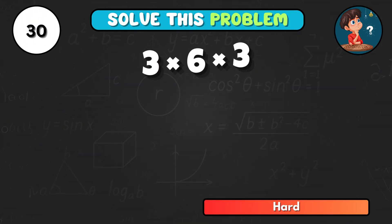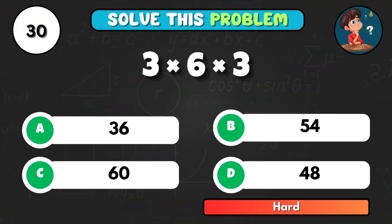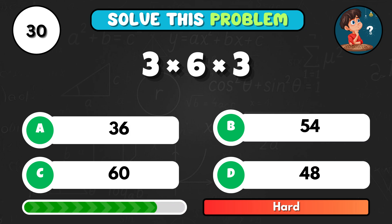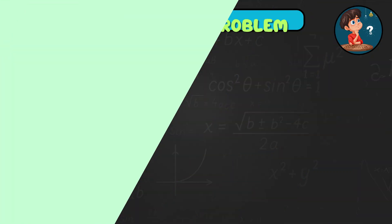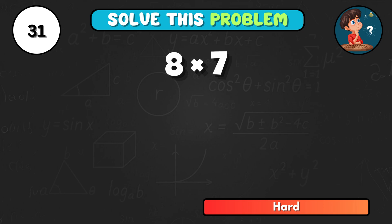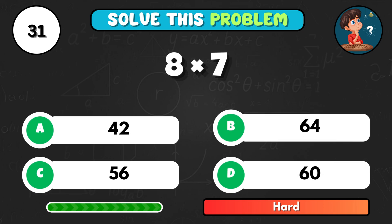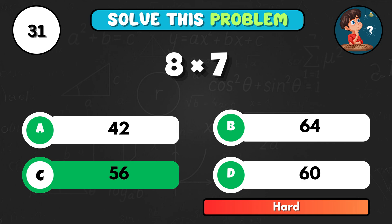Mental math time. 3 times 6 times 3. That equals B, 54. Let's see. What's 8 times 7? That's C, 56.